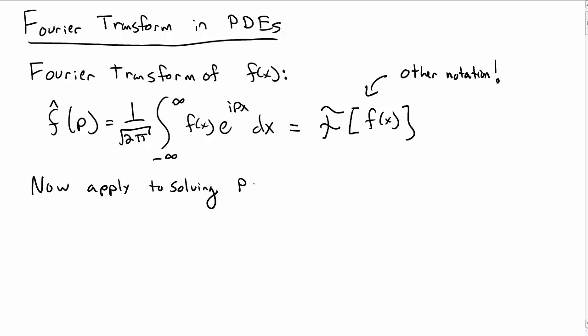So what we want to do is now apply this idea of a Fourier transform to solving partial differential equations. Before we do that we need some properties of the Fourier transform itself, curly F of something.